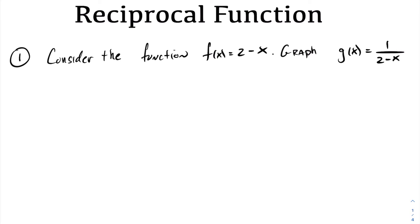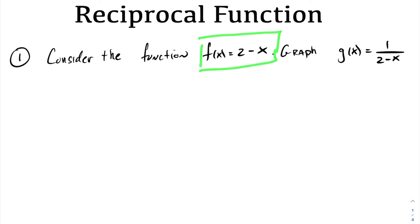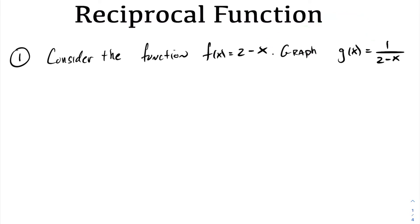In today's lesson, we're going to be looking at graphing the reciprocal function. We're going to take a linear function and use its observations and characteristics to graph its reciprocal, i.e. 1 over 2 minus x.